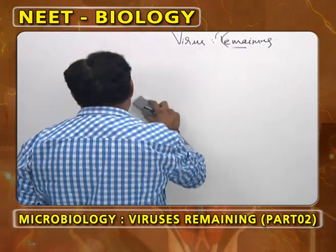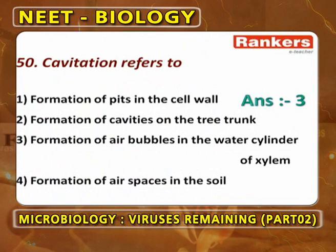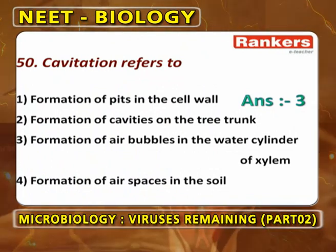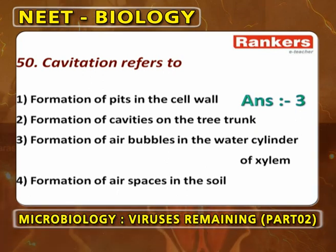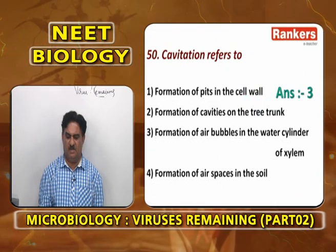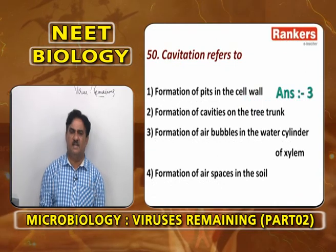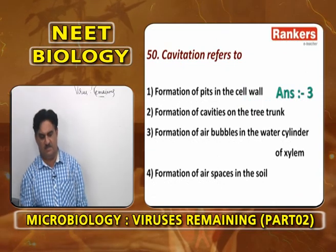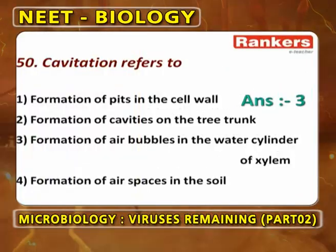So cavitation and embolism: cavitation refers to the formation of air bubbles in the continuous water column disturbing its continuous movement. Formation of air bubbles in the water cylinder of xylem is correct — third option is correct. Cavitation does not refer to formation of pits in cell wall, cavities in tree trunk, or air spaces in soil.